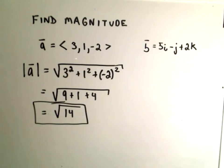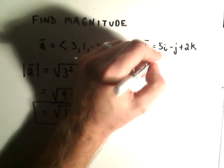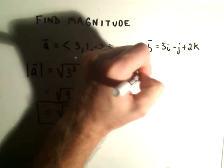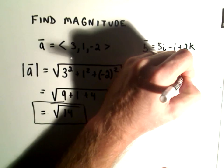Likewise, if we do the other one, the same thing will happen. Now I'm writing this as 5i minus j plus 2k. Remember, we could write that vector B as 5 and then negative 1 and then 2.